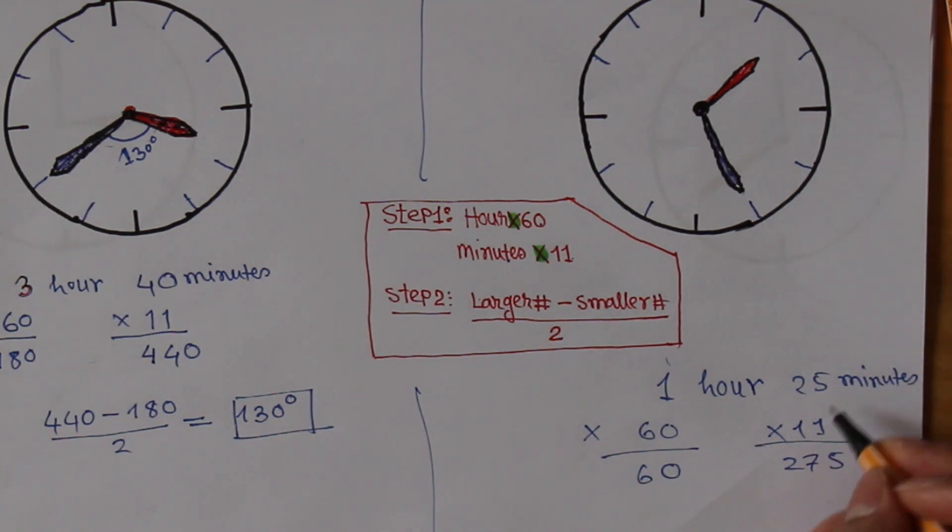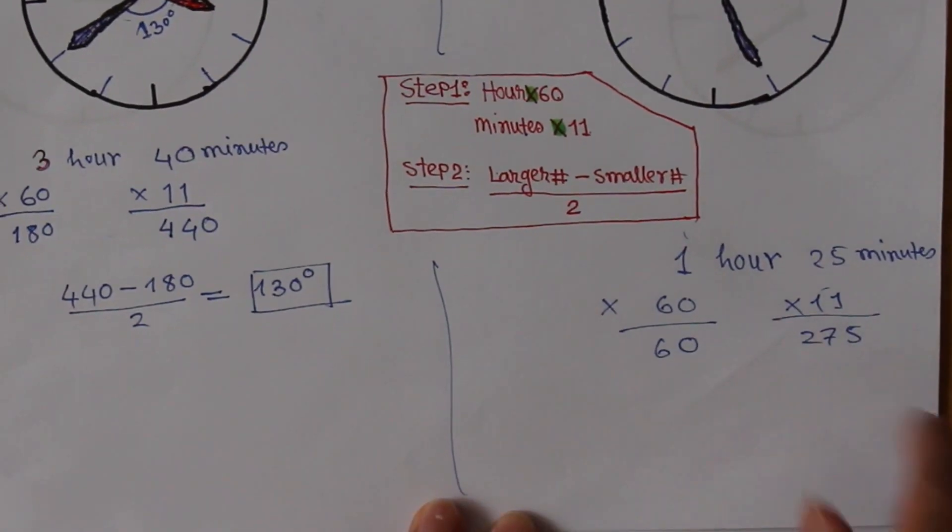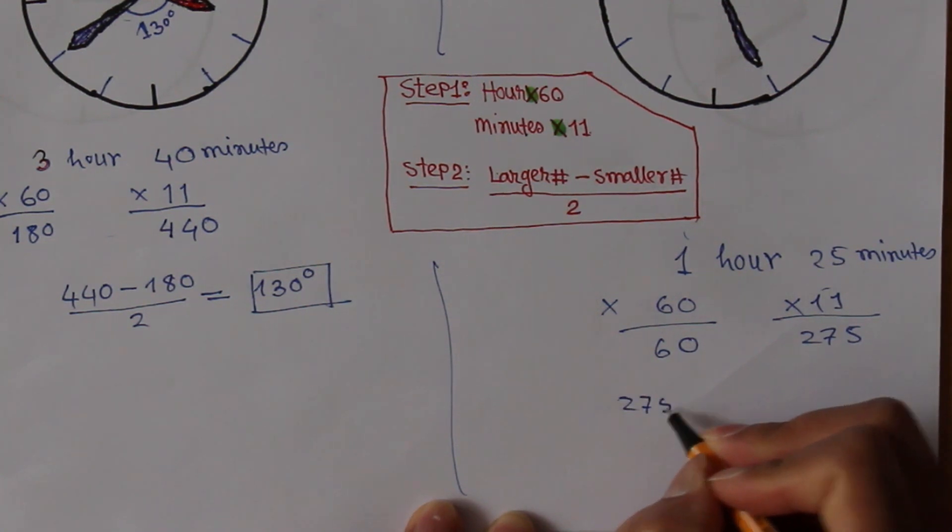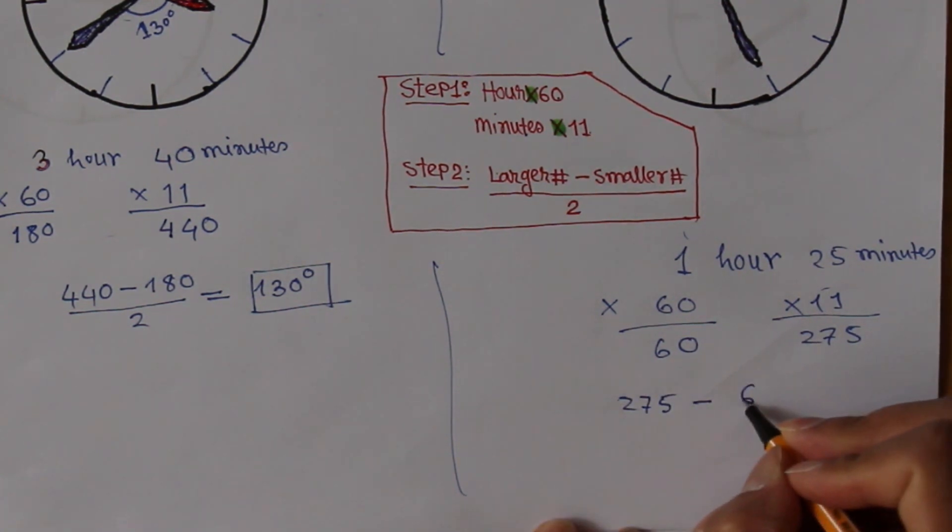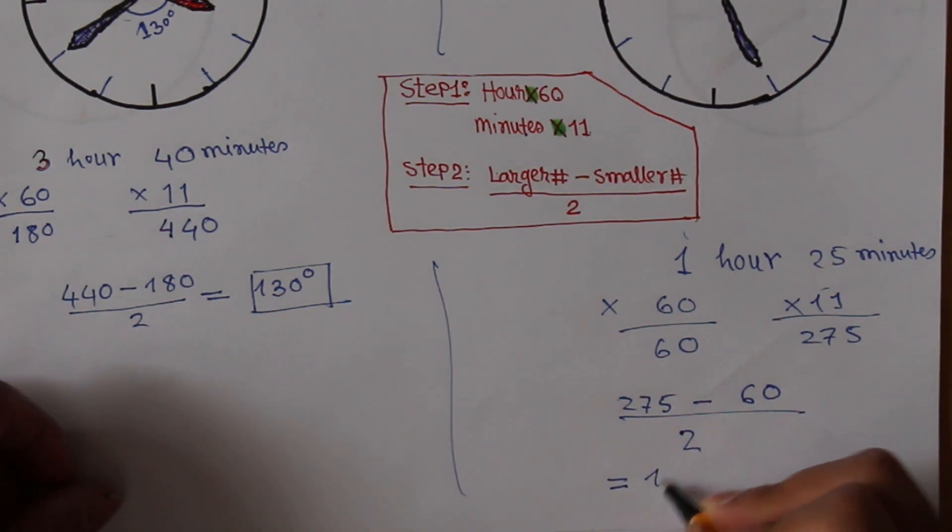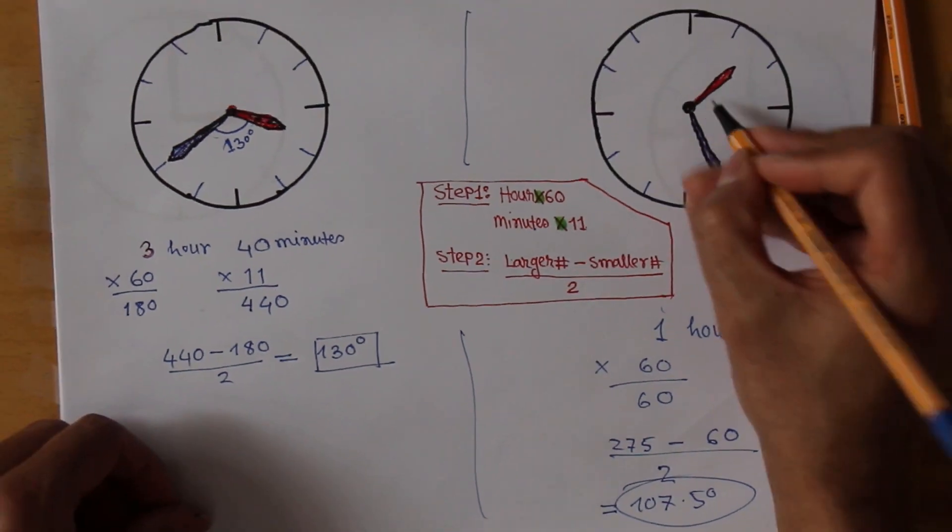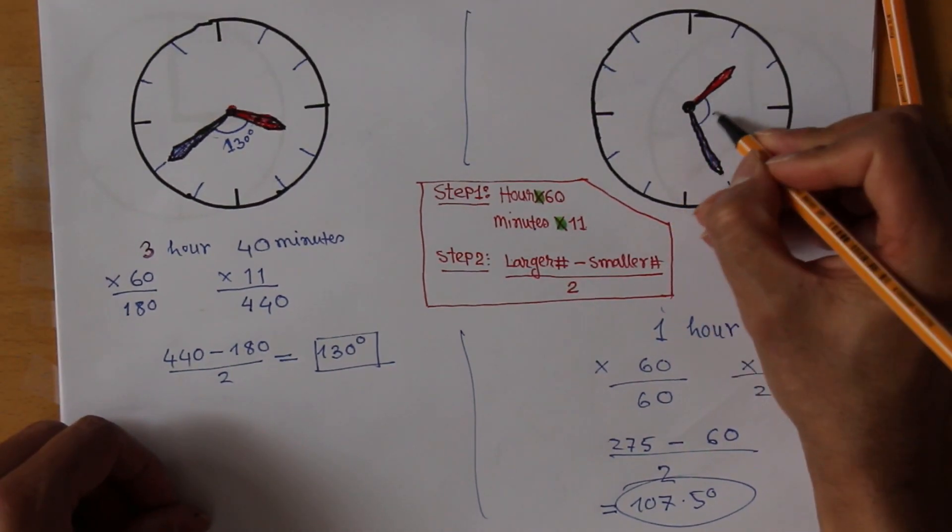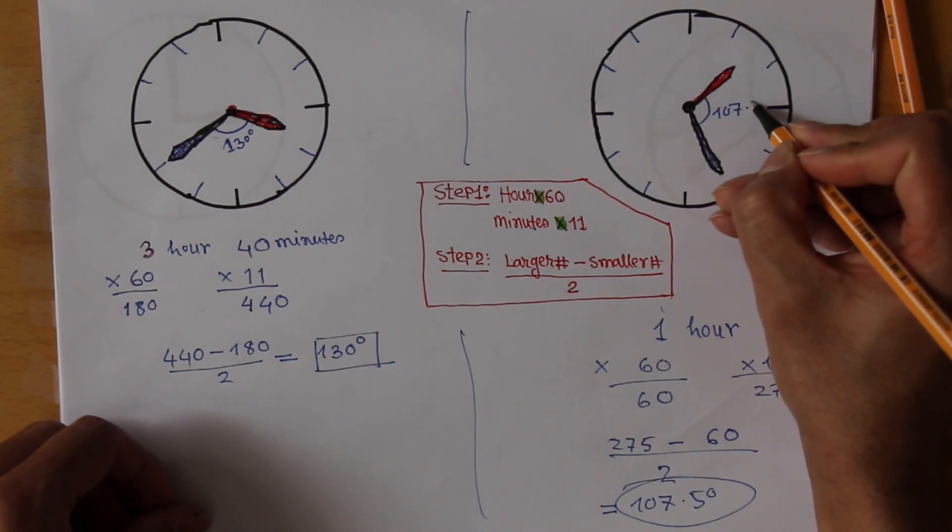I have varied tricks how to multiply something by 11. Second step is: subtract the smaller number from the bigger one. 275 minus 60 divided by 2, which equals 107.5 degrees. Yes, this is the answer. The angle between these two arms is 107.5 degrees.